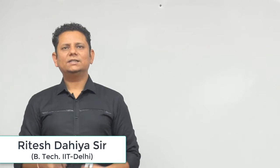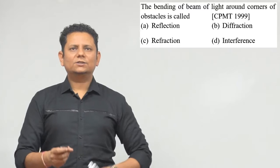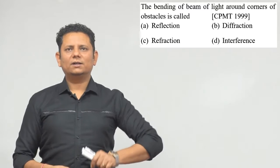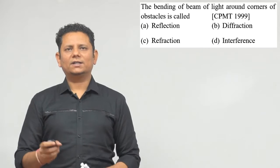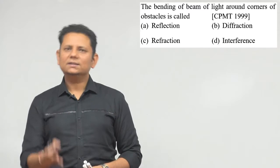Next question. The question says: the bending of a beam of light around corners of an obstacle is called — reflection, refraction, diffraction, or interference?